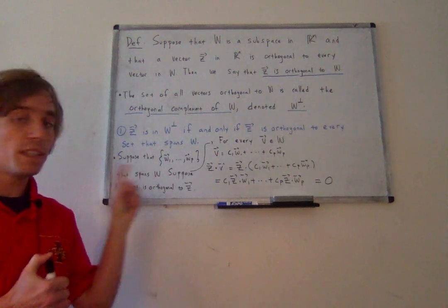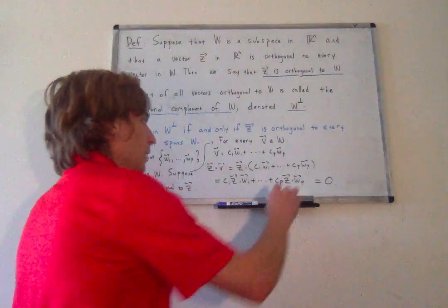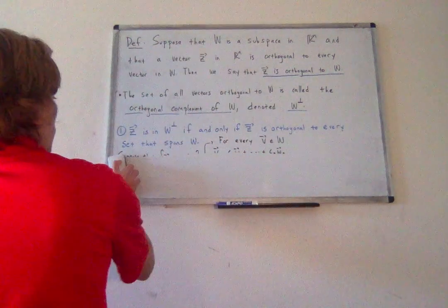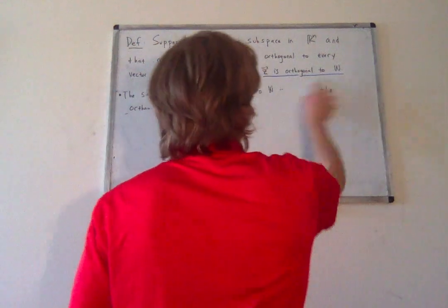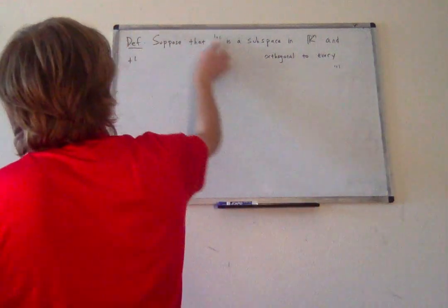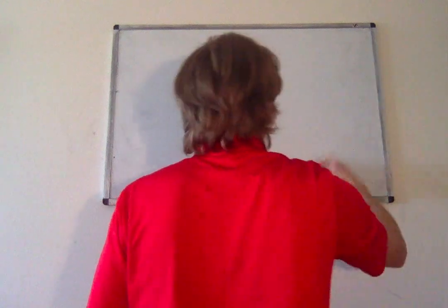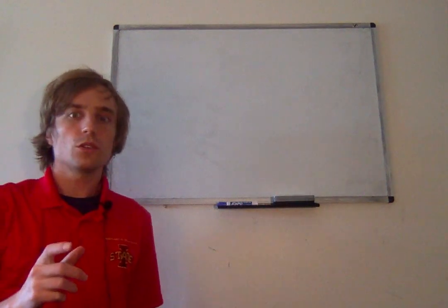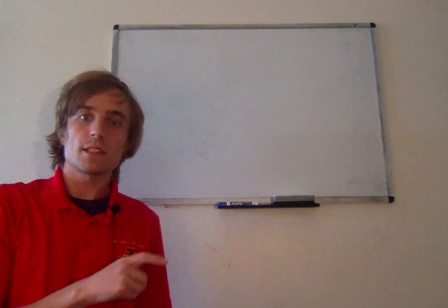So why this statement is extremely important — and we will call on this idea quite a bit — is that all we need to do to show that a vector is orthogonal to an entire set is show that a vector is orthogonal to a basis for that set.